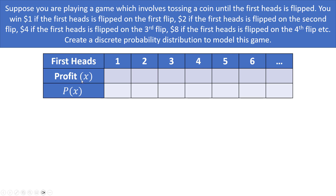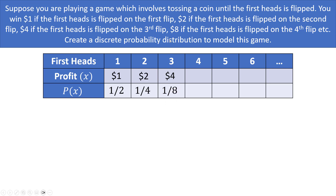If heads appears on flip 1, you win $1 with probability 1/2. If first heads is on flip 2 (requiring tails then heads), you win $2 with probability 1/4. If first heads is on flip 3 (tails, tails, heads), you win $4 with probability 1/8. The pattern continues: $8 at 1/16, $16 at 1/32, $32 at 1/64, and so on forever.